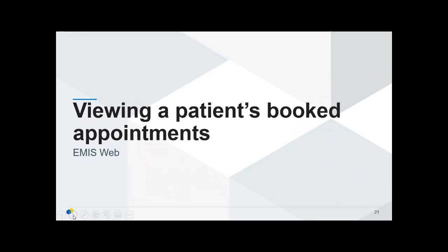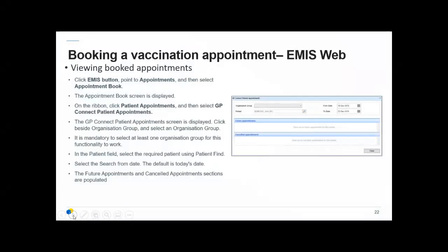To check a patient's booking or make a change, view their booked appointments. In the EMIS button, go to Appointments and Appointment Book, and on the ribbon click Patient Appointments, then GP Connect Patient Appointments. You can then see the patient appointment screen. Choose an organisation group — you must choose one — then choose a patient and a date range, which defaults to the next two weeks. Future appointments and cancelled appointments will be populated.